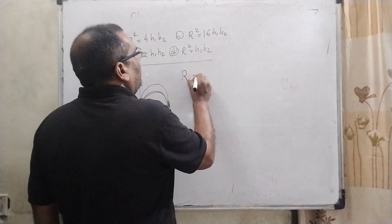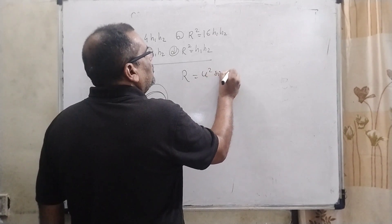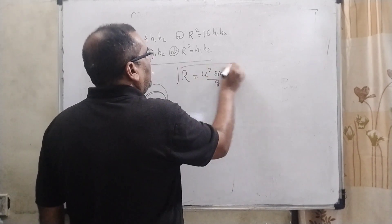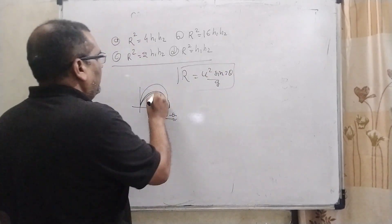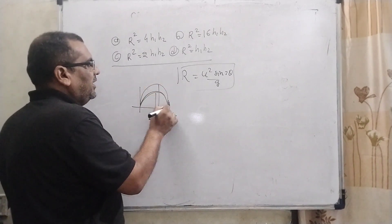the range, the formula of range is u square sine 2 theta by g. And the height is different. Here very interesting things, the height is different but range is the same.